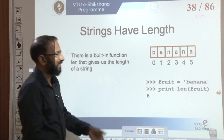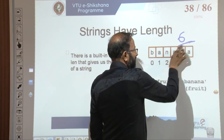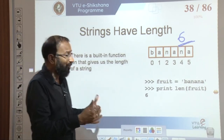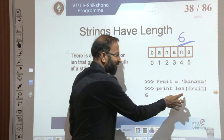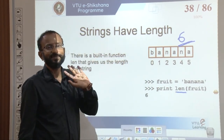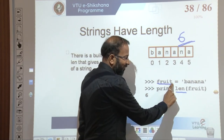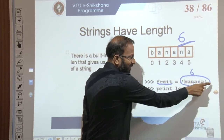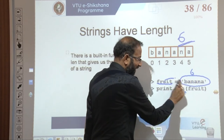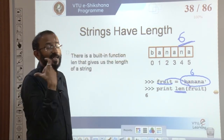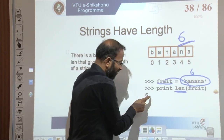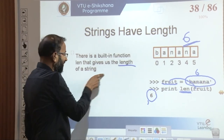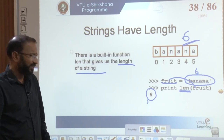We counted 6 characters in 'banana', but how do we get that programmatically? We use the built-in function len(). With fruit = 'banana', calling len(fruit) returns 6 — the number of characters in that string. len() is a built-in function, meaning the code is already written, pre-compiled, and readily available. We can also write our own functions using the 'def' keyword, which we will discuss further in later sessions.